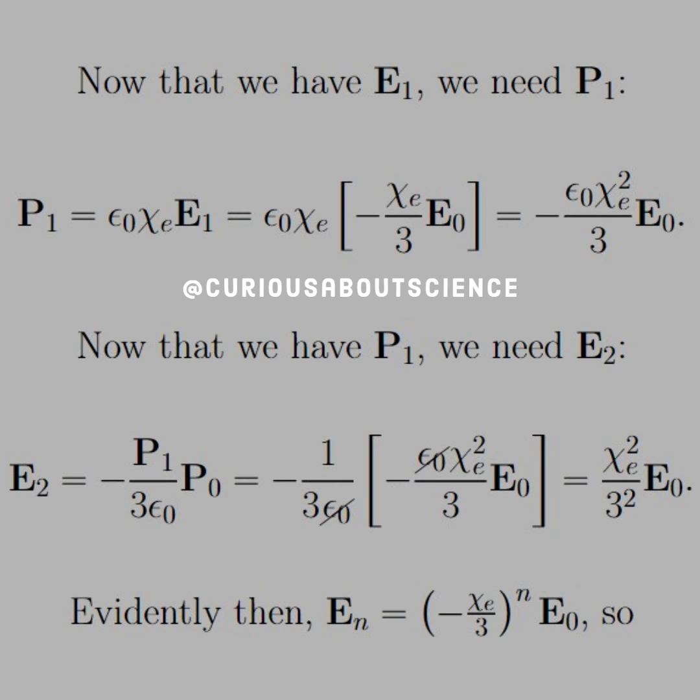Well, but now that we have P1, we need to find E2. So we substitute that in. And I think there's a typo there. There definitely is. There should not be a P0 there. So scratch the P0 out, but E2 equals P1 over 3 epsilon not, which we see is the term in the brackets.